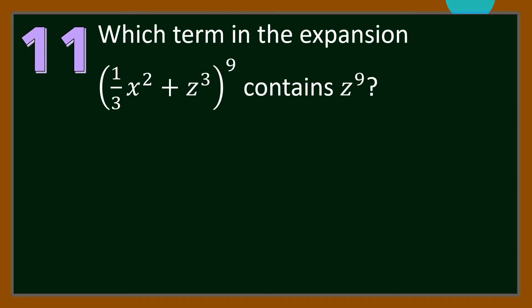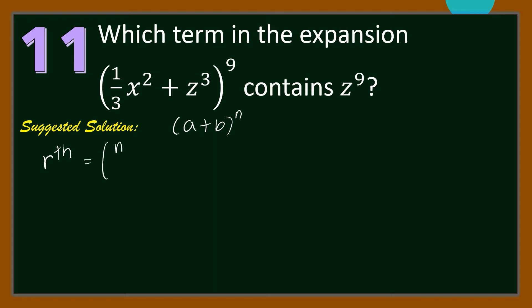Let us begin with Number 11. Which term in the expansion (1/3 x² + z³)⁹ contains z raised to 9? For our suggested solution, we're going to use the formula for the rth term of the binomial expansion (a + b)ⁿ. Any term can be obtained by getting C(n, r−1) times the first term a raised to n minus (r−1) times the second term b raised to r−1.